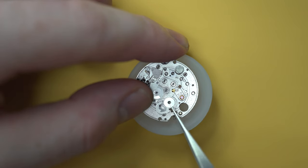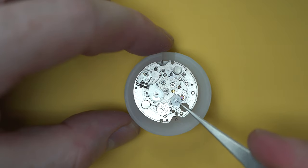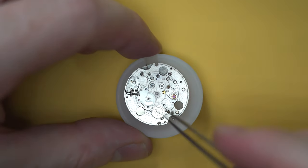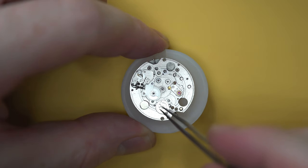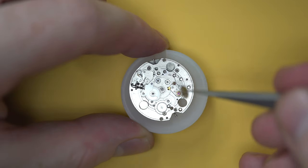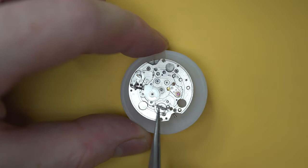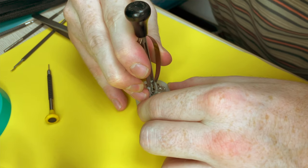After that, we can start taking off some of the additional wheels for the calendar complication. I'm not too sure what these wheels are called, I should do a bit more research. But I have been doing a bit more reading. For those of you that have just joined, this is something new to me. This is only my third video, which means it's only my fourth watch that I've dismantled. So every day is a school day, I'm still learning on the job.